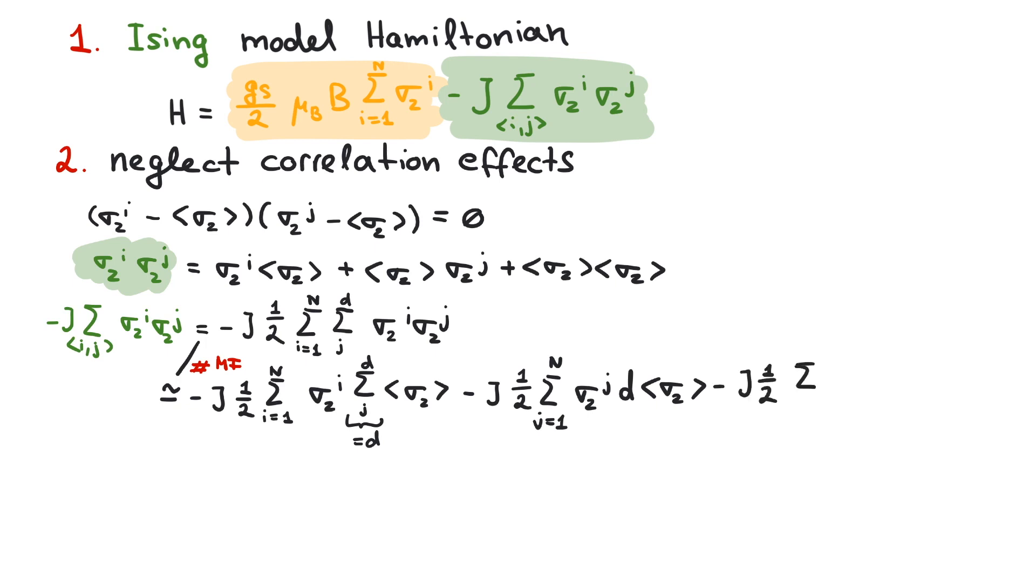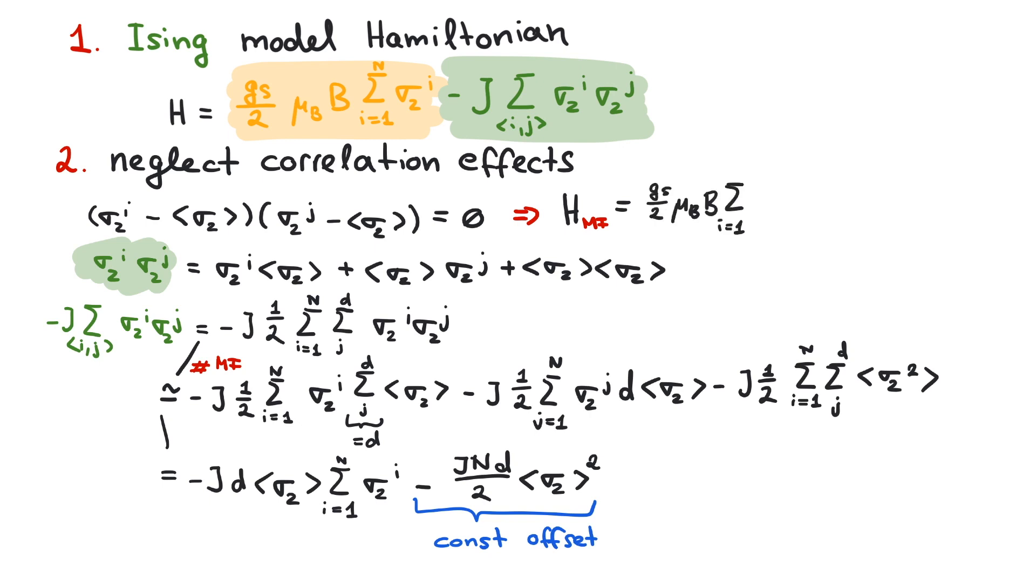Finally, the third term doesn't depend on any degree of freedom in the system. Both sums factor out and give rise to a constant offset to the energy. Collecting all the terms yields the new mean field Hamiltonian. First, the unchanged non-interacting part. And second, the interaction of site I with the thermal expectation of the surrounding spins.